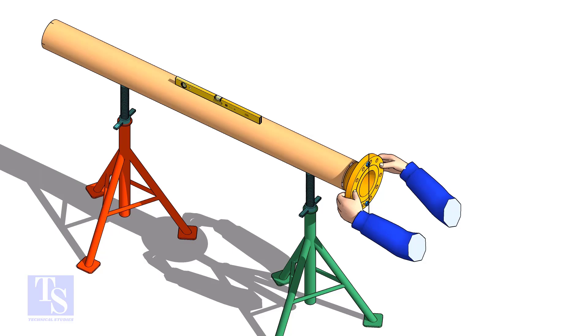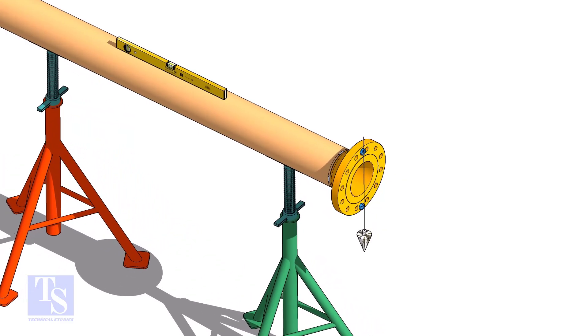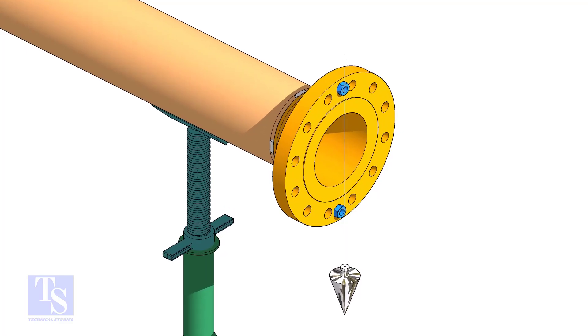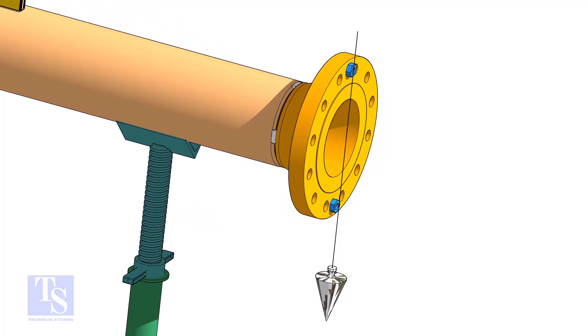In this method, let us learn how to fit up a flange with a pipe using a plumb. Level the pipe, put a plumb through the center of the flange on a nut.